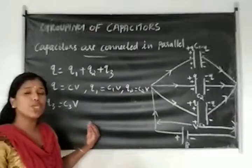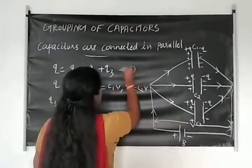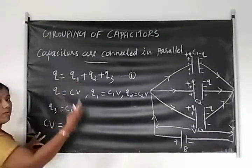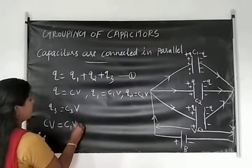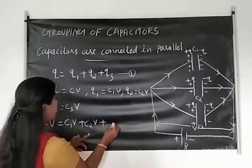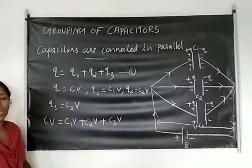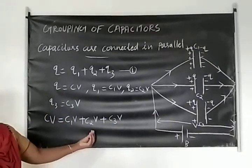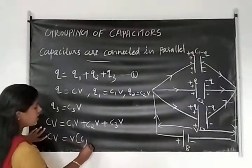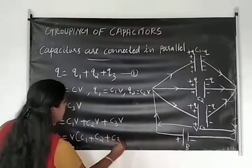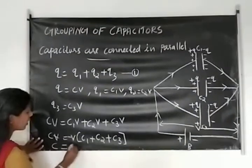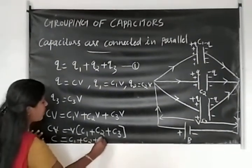We substitute into the main equation. Instead of Q we write CV, instead of Q1 we write C1V, plus C2V plus C3V. V is the common term, so we take it outside: CV equals V into C1 plus C2 plus C3. Then V is cancelled, and our final equation is C equal to C1 plus C2 plus C3.